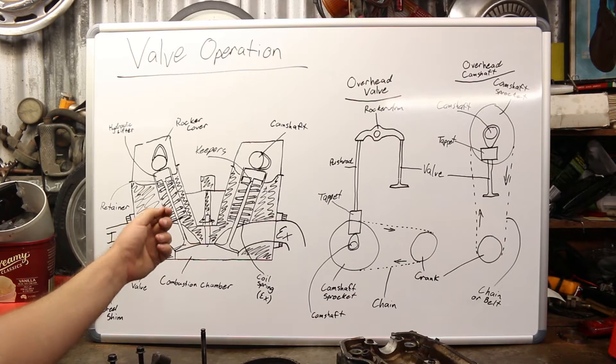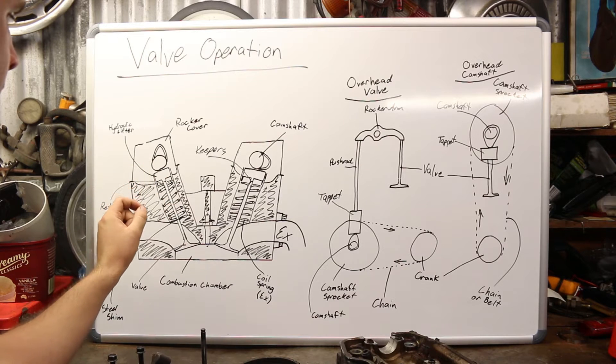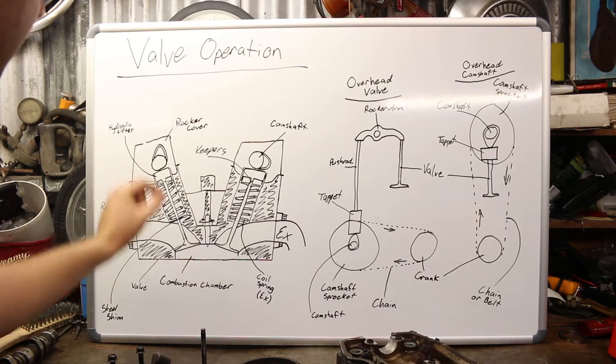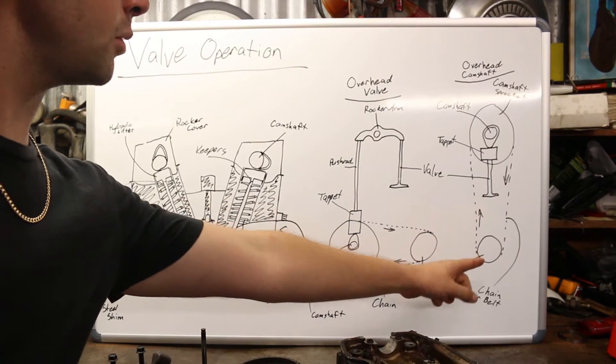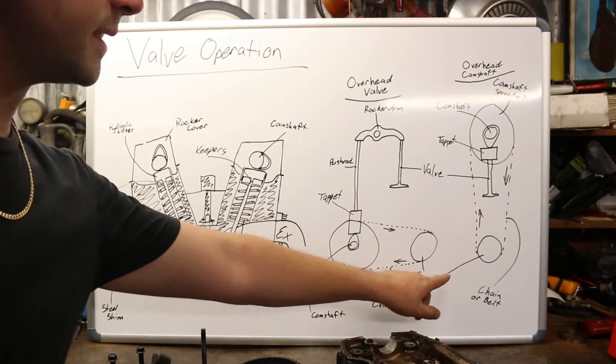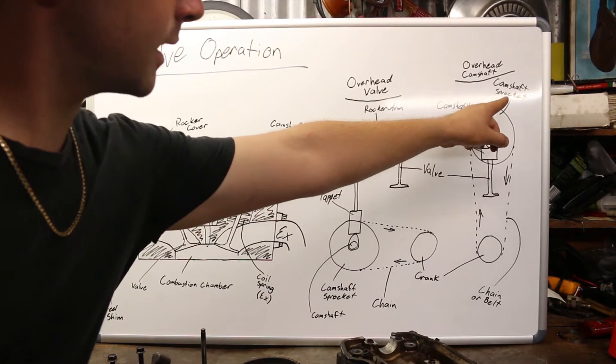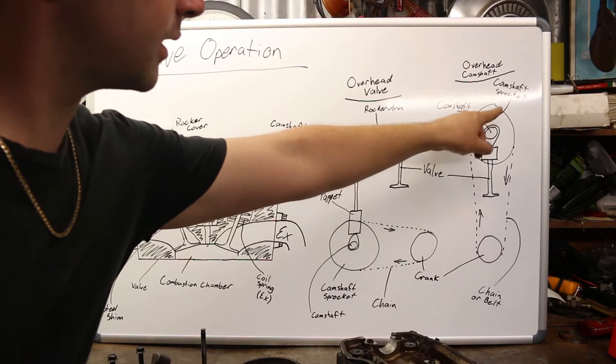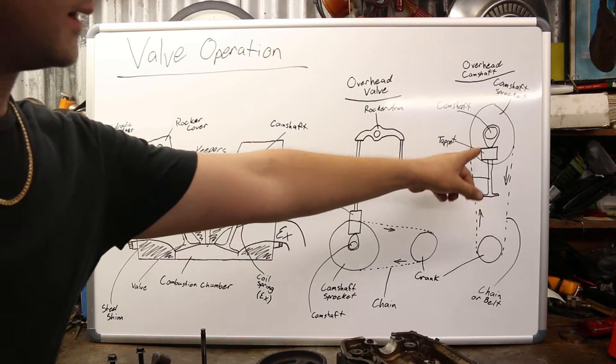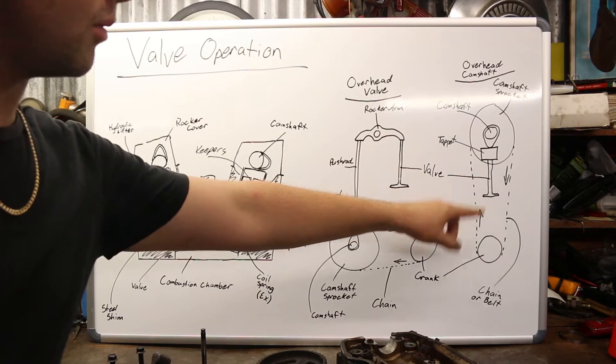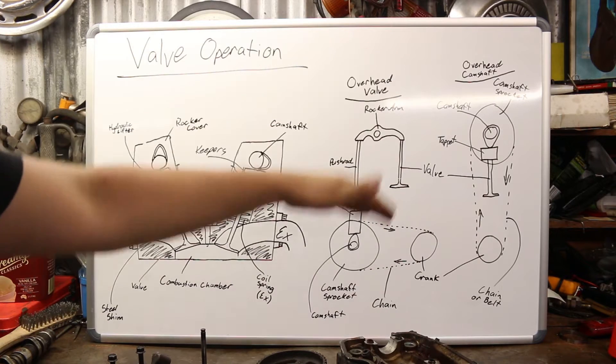So I'm going to briefly explain how all this works to open a valve. So we're going to move over here. We have our crankshaft, right? This is just a basic drawing. We have our crankshaft and it's connected to the camshaft with a sprocket. And those two are connected to each other with either a belt or a chain. So that's how that all turns.